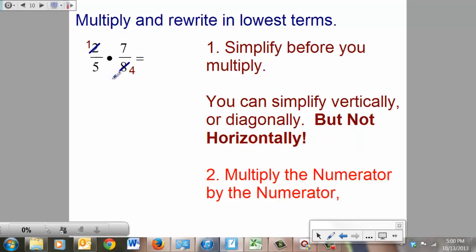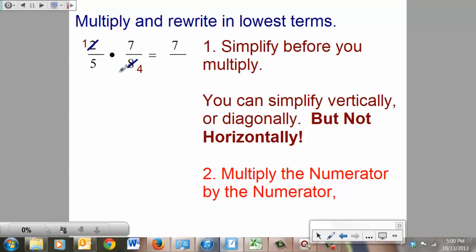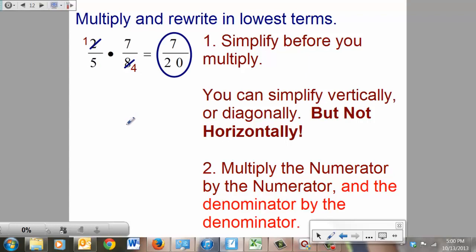The next thing we're going to do is multiply numerator times numerator, the top ones, which gives you 7. Denominator times denominator, the bottom ones, which gives you 20. Simplest terms? You're done. Easy math. If you simplify properly before you multiply, you should not have to simplify after you multiply.